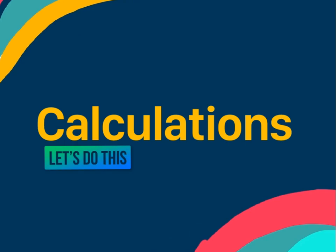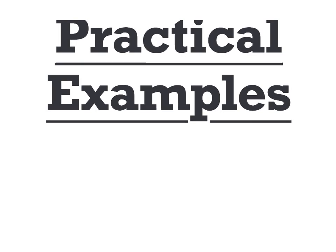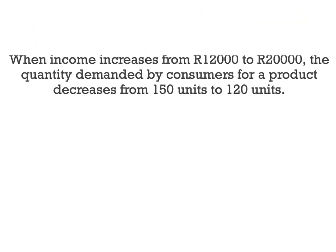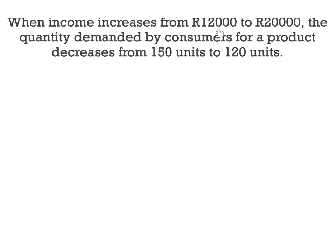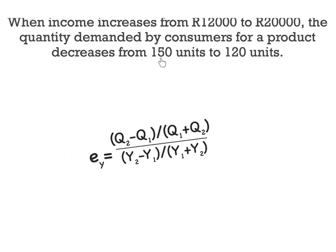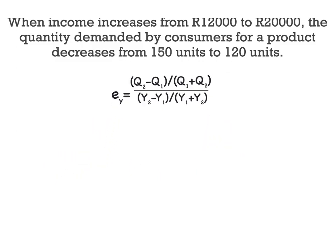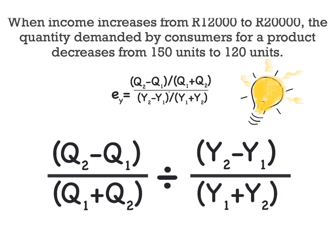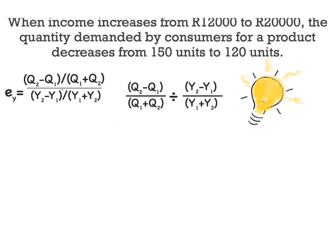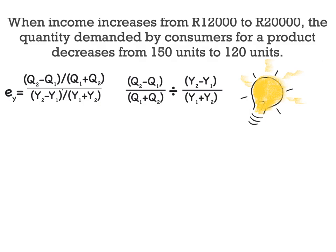Now it's time to look at some practical examples. Grab your notes, pen, and calculator and follow along. For example one, you are given the following information: when income increases from 12,000 to 20,000, the quantity demanded by the consumer decreases from 150 units to 120 units. In order to calculate our income elasticity of demand we will use the arc formula, substituting the correct values into the given formula.